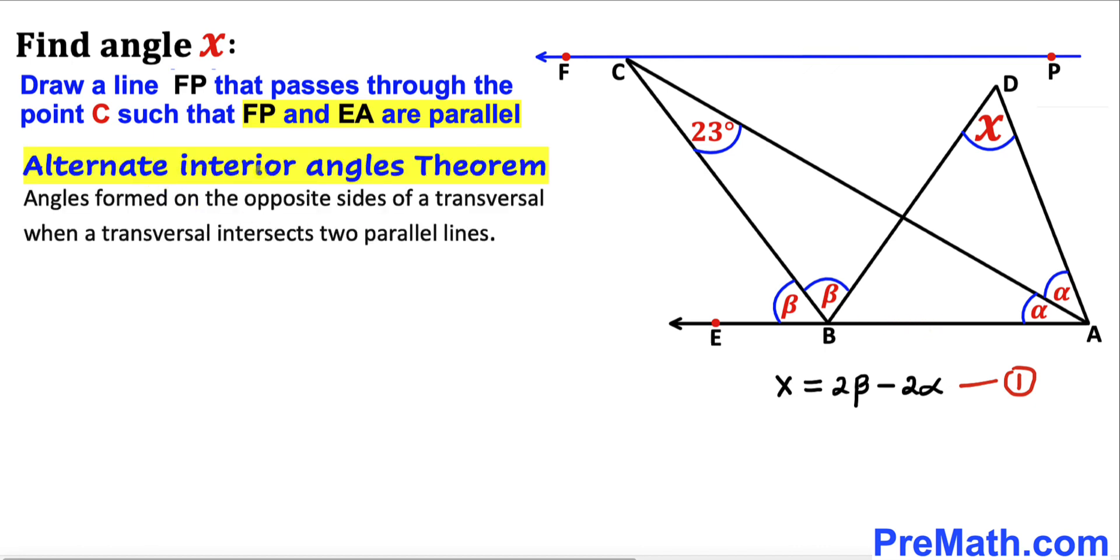Now let's recall the Alternate Interior Angles Theorem. Let's focus on this highlighted transversal line. Angle alpha and this angle are alternate interior angles and they are always equal. If this angle is alpha, this angle has to be alpha as well.